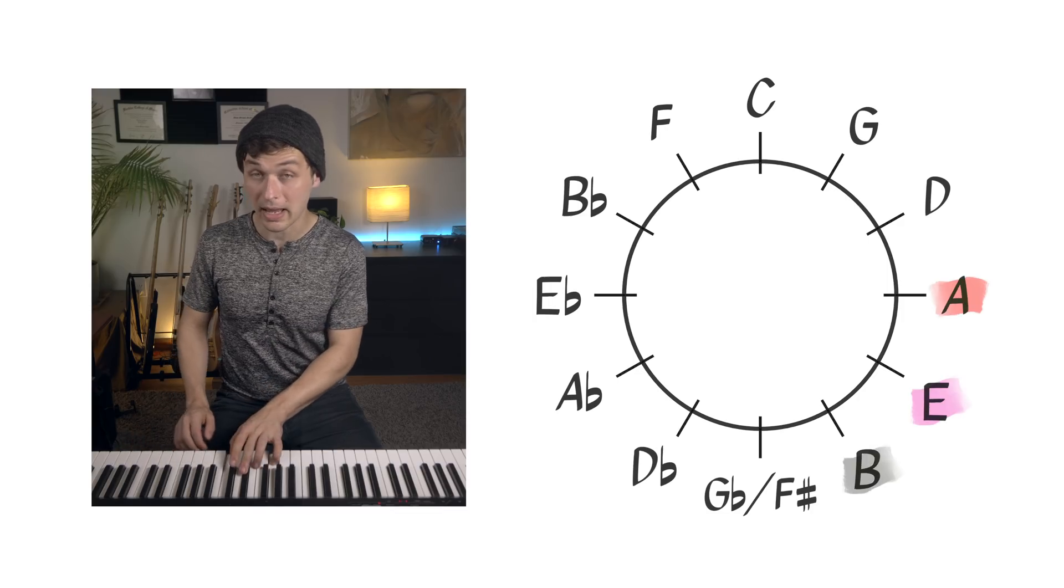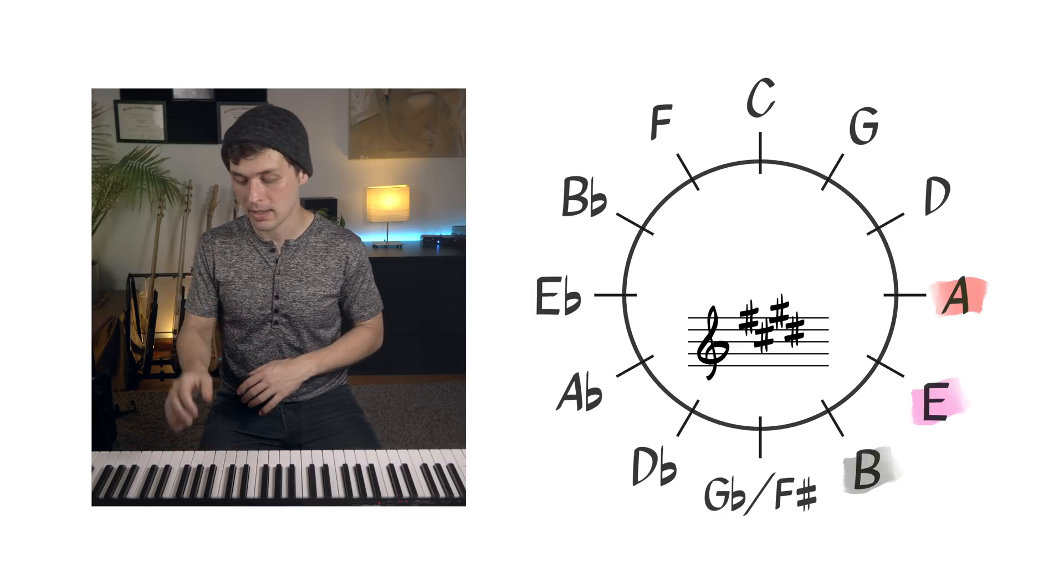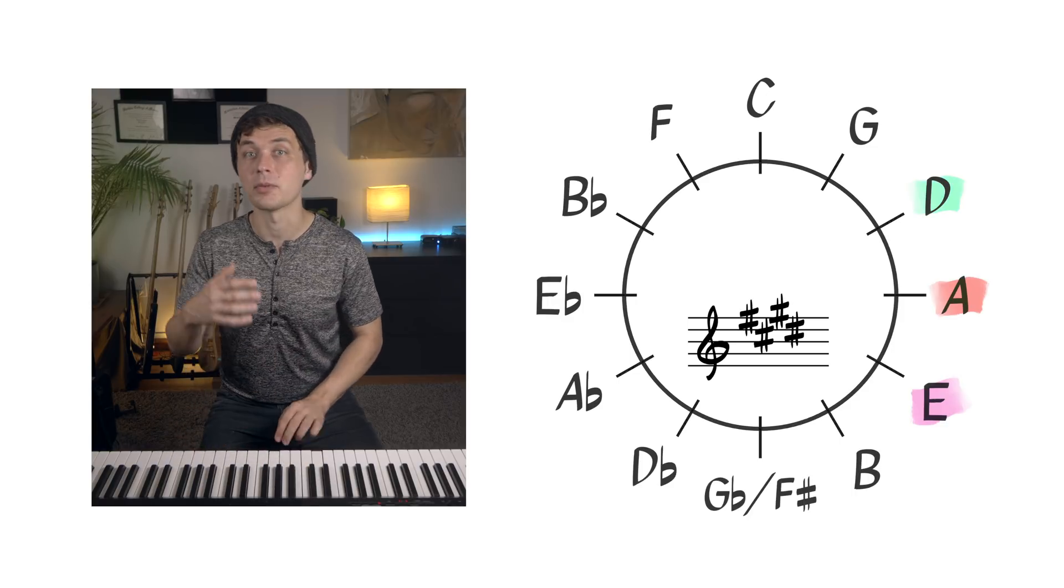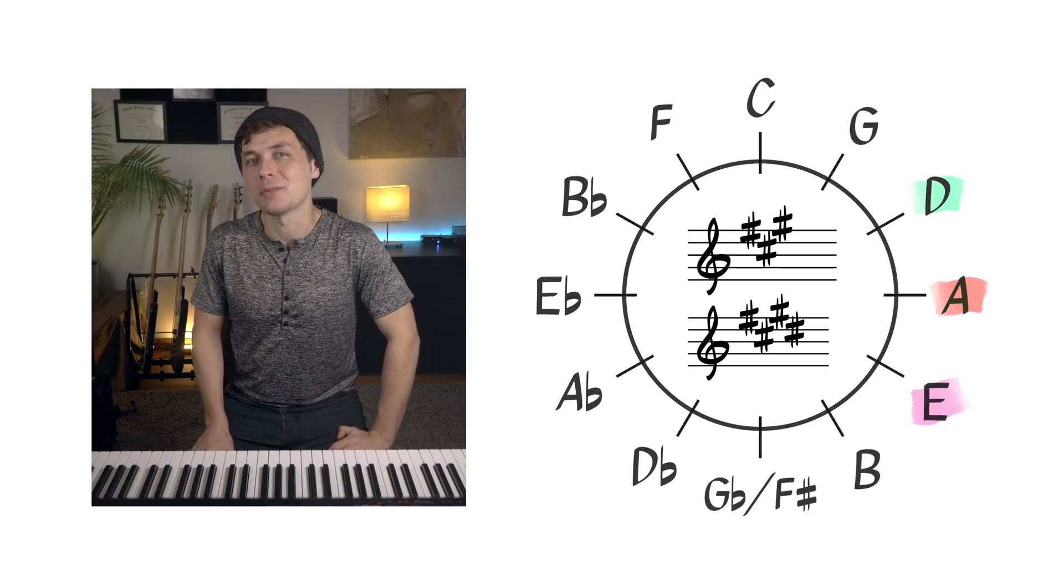The B chord, the E chord, and the A chord come from the key of E, and the E chord, the A chord, and the D chord come from the key of A. How does this alchemy work? The answer lies in the harmonic series.